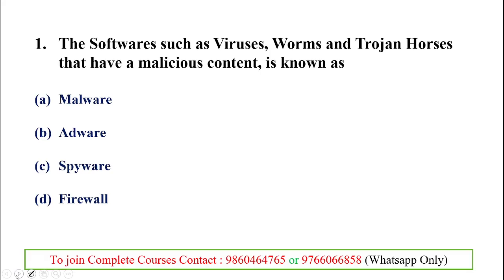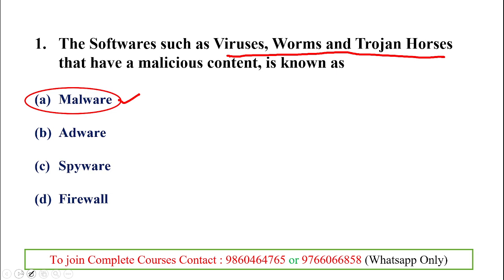Let's start the first question. The first question deals with software such as viruses, worms, and trojan horses that have malicious content — this is known as malware. Viruses, worms, and trojan horses are harmful for a computer or device that they infect, and the malicious content — content that does harm — is known as malware, or malicious software.